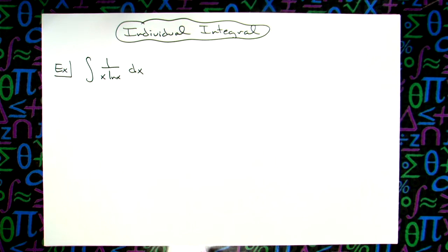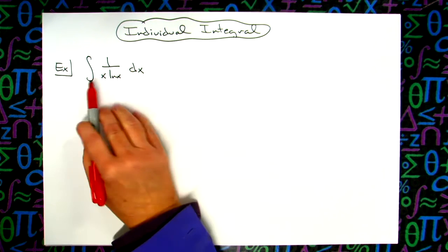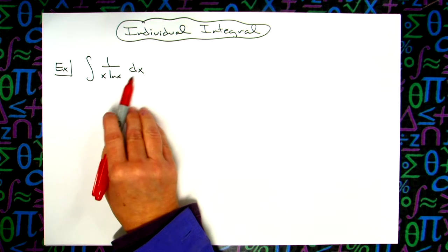Alright, in this video we're going to take a look at an individual integral. It is going to be a basic u substitution integral. So we're going to integrate 1 over x times natural log of x dx.